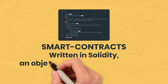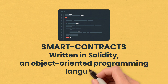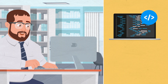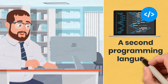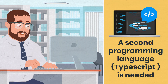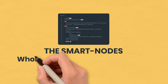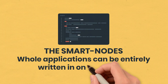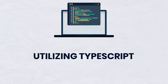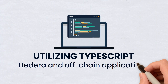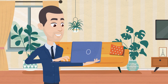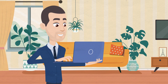Language: smart contracts are written in Solidity, an object-oriented programming language that cannot interact outside of the blockchain. In order to create a fully functional application, at least a second programming language such as TypeScript is needed. With smart nodes, however, whole applications can be entirely written in one language, as they utilize TypeScript to interact with Hedera and off-chain applications, making them easier to maintain and develop.